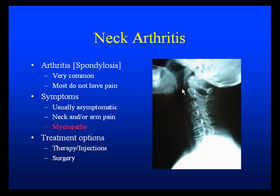The most concerning thing that can happen with people who have arthritis is possibly having some pressure put on their spinal cord, which can be a combination of the bony spurs from the arthritis as well as disc herniations. In these situations, more emergent intervention would be necessary.